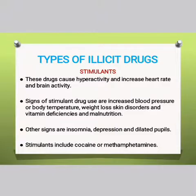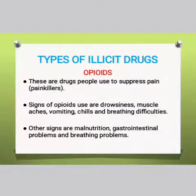The other category of illicit drugs are called opiates. Opiates are drugs used to suppress pain — in other words, they are used as painkillers. Several signs can be observed in individuals who are abusing opiates: drowsiness, muscle aches, vomiting, chills, and breathing difficulties. It is important to understand that excessive use or overdose of opiates can lead to malnutrition, gastrointestinal problems, as well as breathing problems.